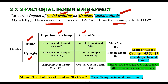To find the main effect for gender, we calculate the overall mean for males: (60 + 40) / 2 = 50. For females: (80 + 50) / 2 = 65. To find the main effect for training, we calculate the mean for the experimental group: (60 + 80) / 2 = 70, and the mean for the control group: (40 + 50) / 2 = 45. These are called the marginal means.